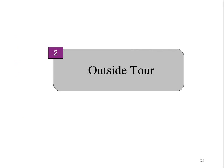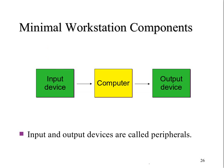Now I'd like to take a tour of the outside of a typical personal computer. In order to be useful, a computer needs to have at least one input device and at least one output device. If we have a computer along with its input and output devices, we could call that a workstation. Input and output devices are often referred to as peripherals because they are peripheral, or outside, of the computer.